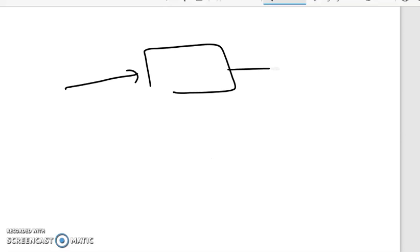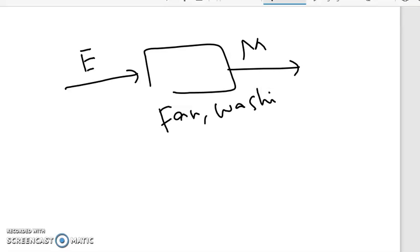Electrical devices take electrical energy as input and produce mechanical energy as output. When input is converted into output in an electronic device, different processing activities are applied. Examples of electrical devices are a fan, a washing machine, and different devices that we use in our daily life.